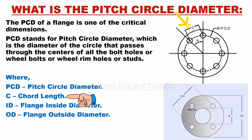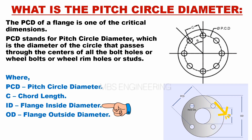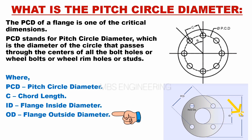C is the chord length of the flange. ID is the inside diameter of the flange. OD is the outside diameter of the flange.